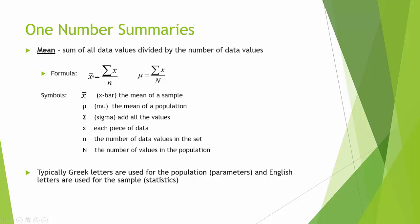For both formulas, the first formula uses the English letter x-bar — that is x with a bar on top — and it is the mean of a sample. The Greek letter mu, which looks almost like an m, is the mean of a population. We calculate these the exact same way. On the top of the fraction bar we have the Greek letter sigma, which is shorthand notation meaning to add up everything — all the data pieces represented by x. Then we divide by the number of data values: lower case n for a sample, upper case N for the population.